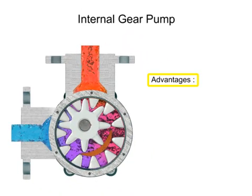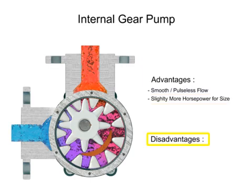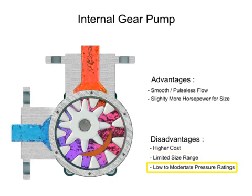Advantages of internal gear pumps are a smooth and almost pulseless flow and slightly more horsepower for its size. Disadvantages are its higher cost, limited size range, low to moderate pressure ratings, and few sources of manufacture.